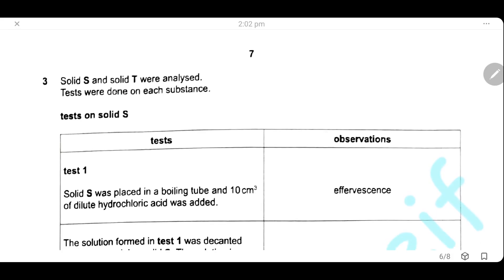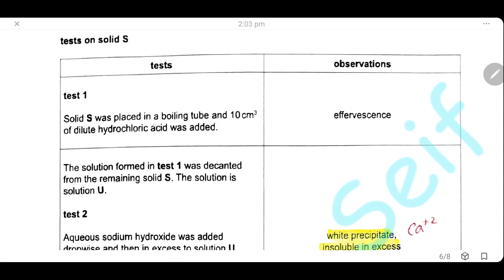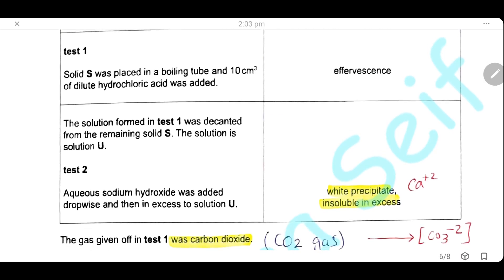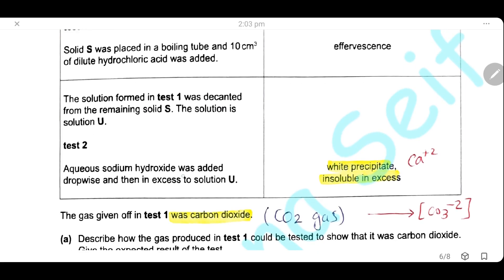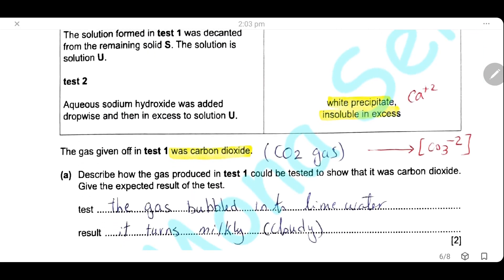Question 3. Solid S and solid T were analyzed. Tests were done on each substance. First, tests on solid S. Test 1: Solid S was placed in a boiling tube and then 10 cm³ of dilute hydrochloric acid were added. The observation is effervescence. The solution formed in test 1 was decanted. We removed the excess solid and solution U is formed. We add sodium hydroxide dropwise and then in excess to solution U. Our observation is white precipitate which is insoluble in excess. That observation represents the presence of calcium ions because calcium ions form a white precipitate which is calcium hydroxide, which is insoluble in excess.